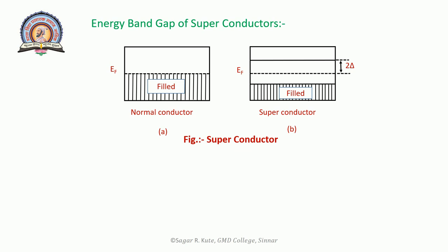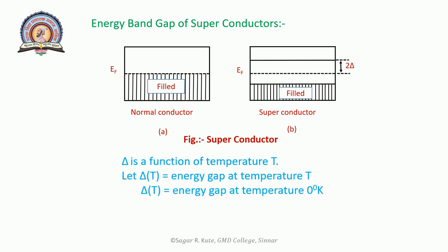Consequently, there is an energy gap of 2 delta at the Fermi level in the superconducting state. Hence, the superconducting state is more stable than the normal state and possesses less energy. The electrons in the excited state above the energy gap 2 delta behave as normal electrons. There are no electrons within the energy gap 2 delta in the superconducting state. These two diagrams represent the normal conductor and the superconductor respectively.